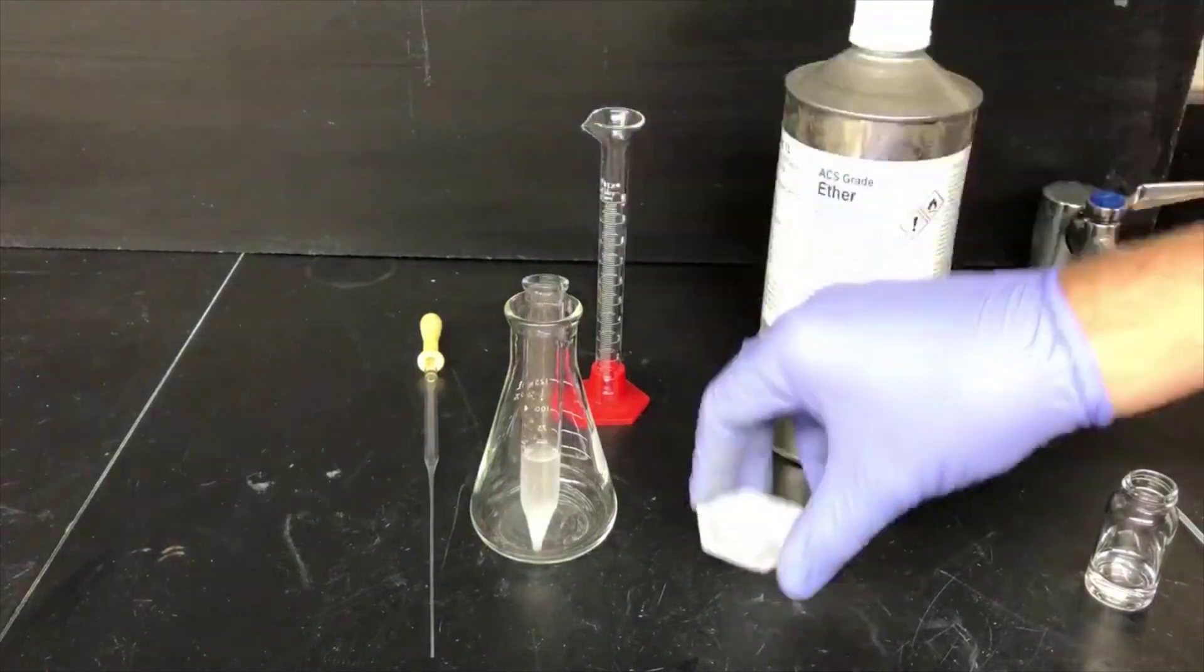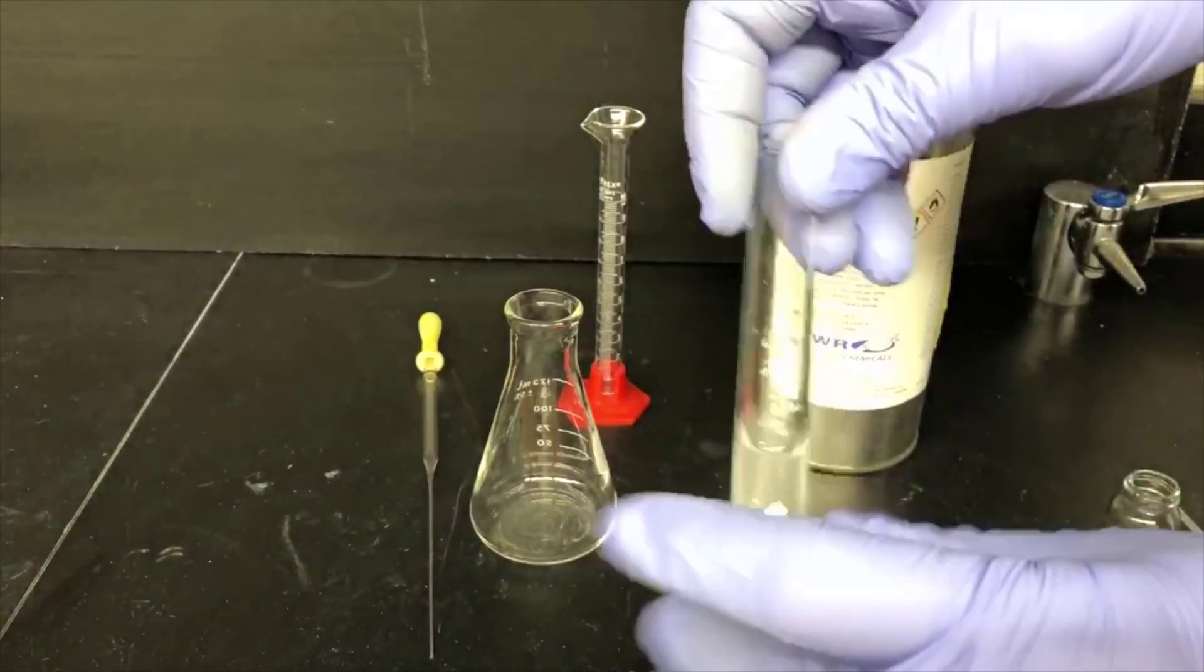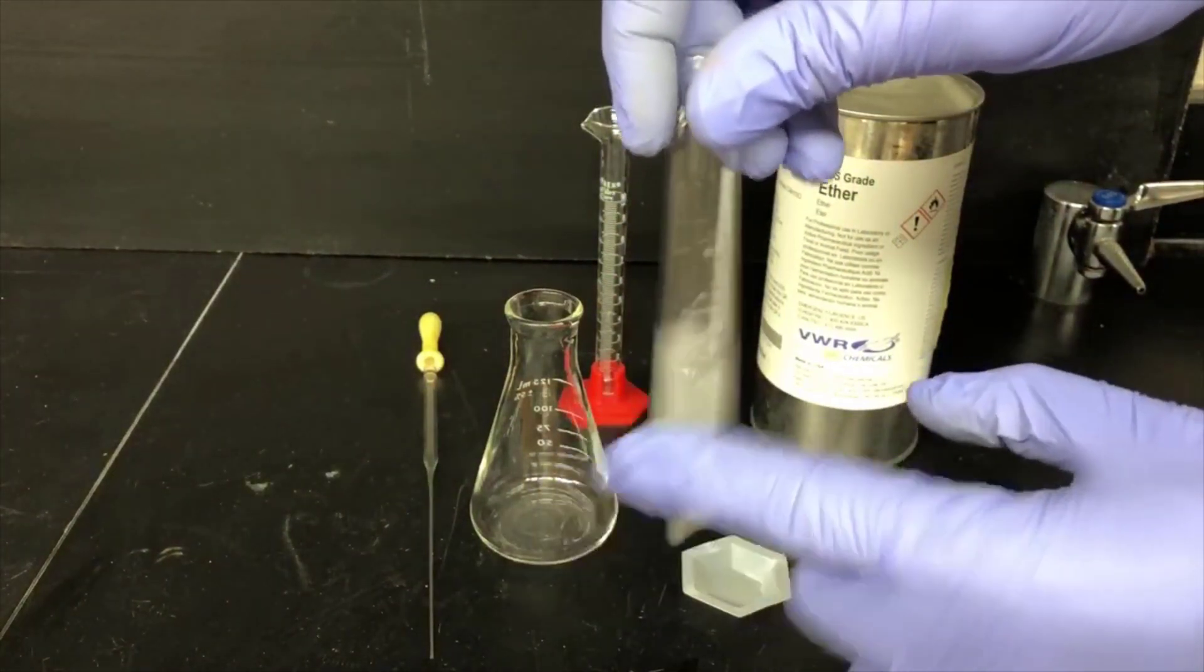Now I'm adding the sodium chloride salt that weighed out earlier, and I'll agitate the test tube to dissolve as much of the salt as possible.